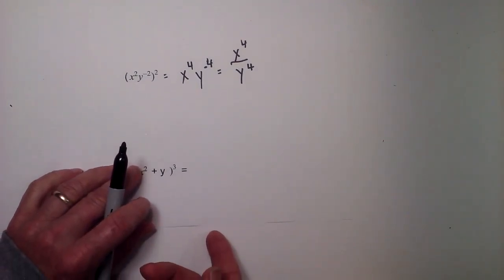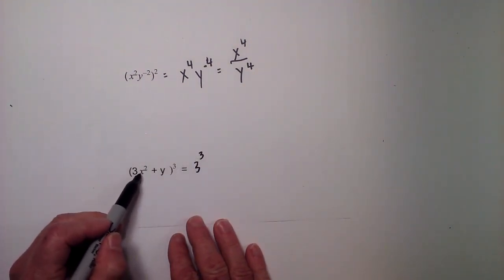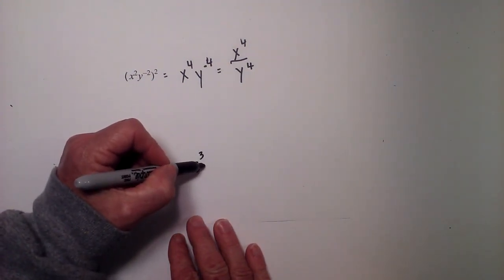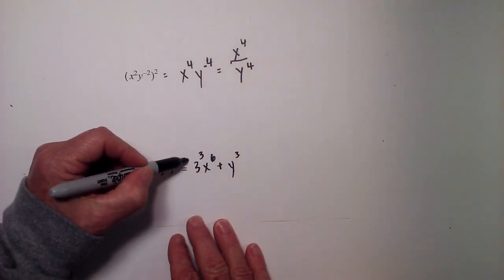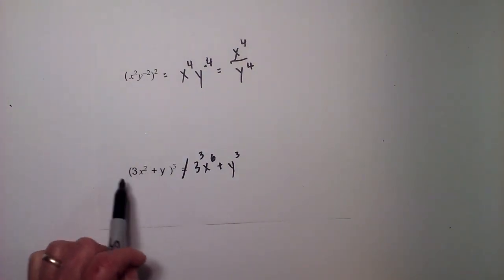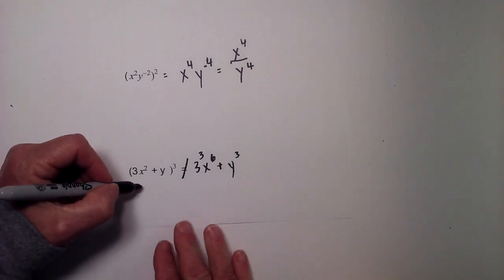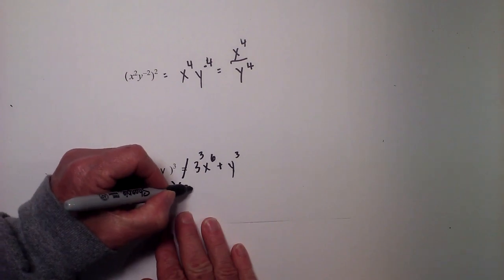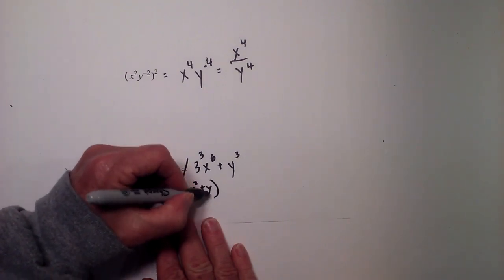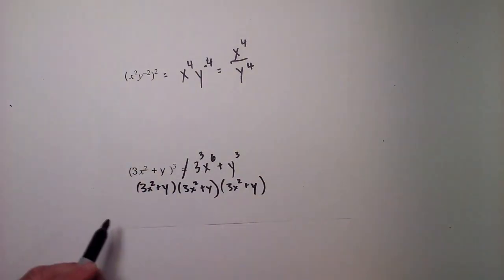Now this next one, you may be tempted to just go 3 to the 3rd, X squared times 3 is X to the 6th plus Y to the 3rd. But that is not a product here. You would actually FOIL this, and it would be 3X squared plus Y times 3X squared plus Y times 3X squared plus Y. So the power of a product would not apply here.